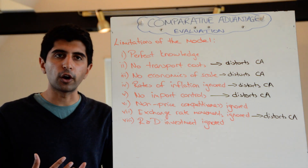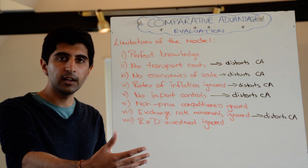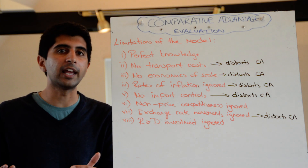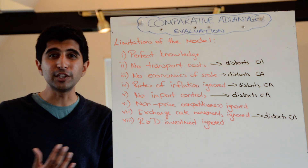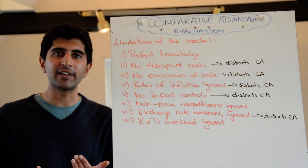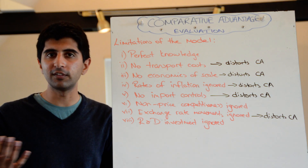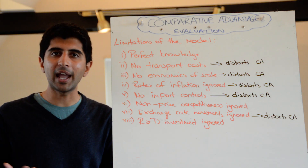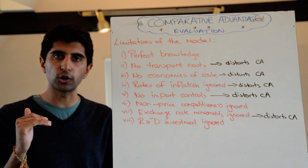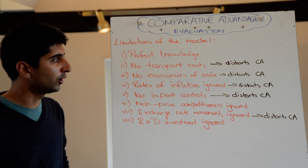The model assumes no transport costs. So it assumes that a country may have a cost advantage compared to other countries, and therefore the price or efficiency it can produce is better, and the final price is lower than other nations. But if you add on the fact that there might be huge transport costs for other nations to buy those products, that might distort and erode the advantage, making that nation less competitive. Australia might have the comparative advantage in lots of different goods and services, but for countries like America or the UK to buy from there may not actually be worthwhile when you add on the transport costs.